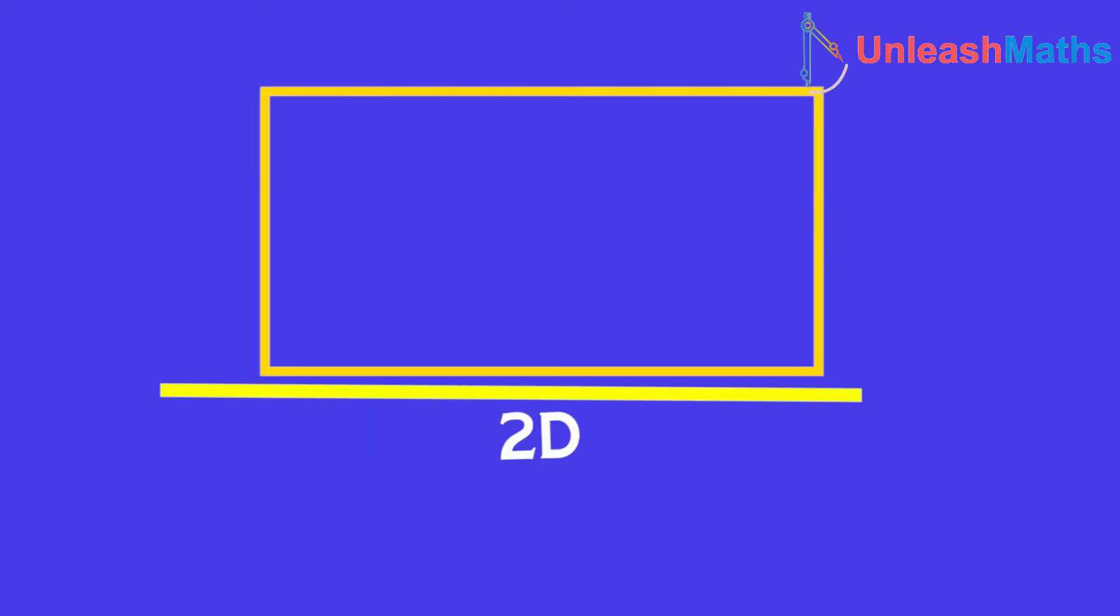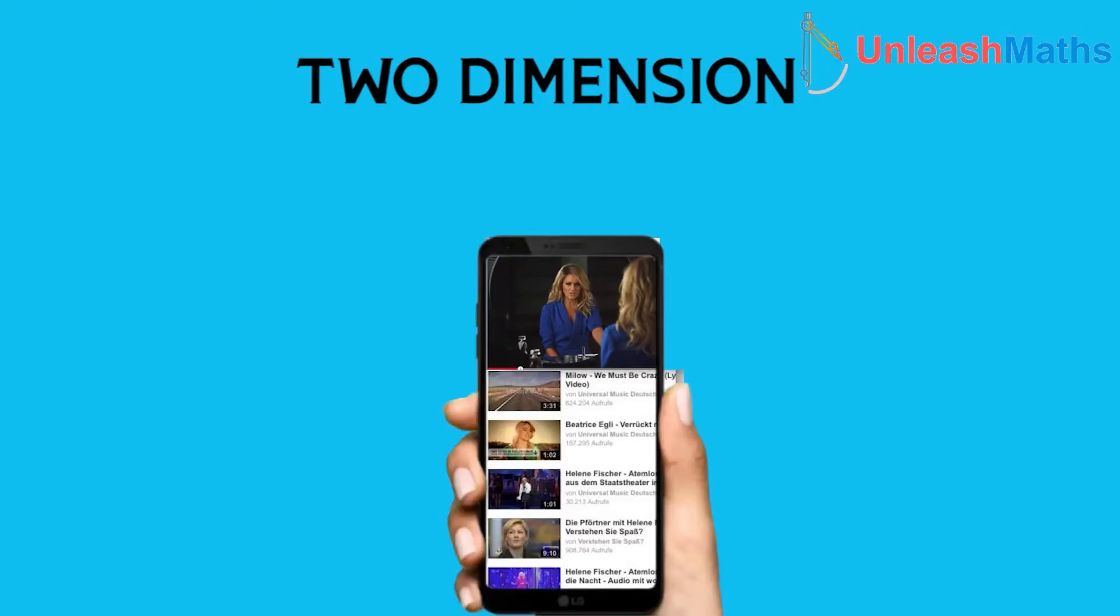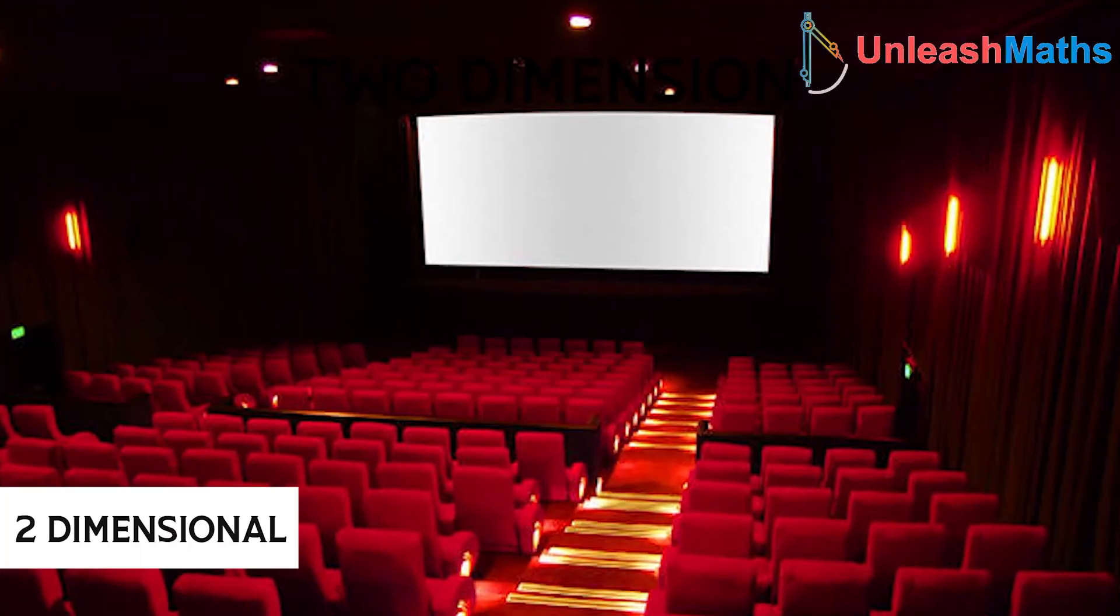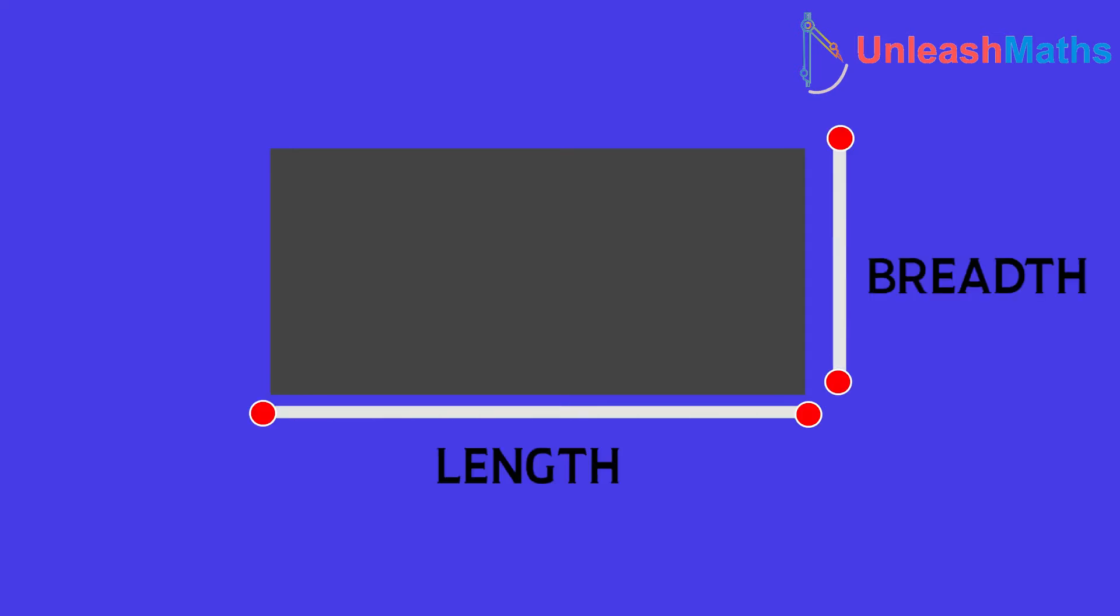If the extent of measurement is 2, then the dimension is called 2D or two-dimension, where two coordinates are required to specify a point on it. The screen of YouTube you see on your phone right now is a two-dimensional space. The normal movies in theatre are an example of two-dimensional space, where you can measure only the length and the breadth or the length and the height of the space, but only two extents of measurement.